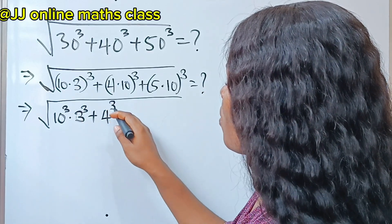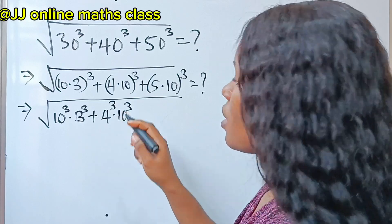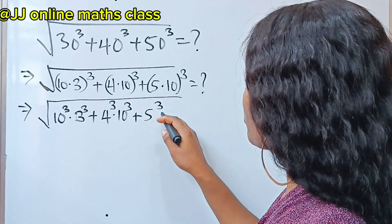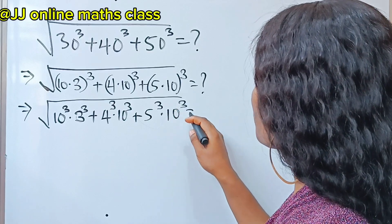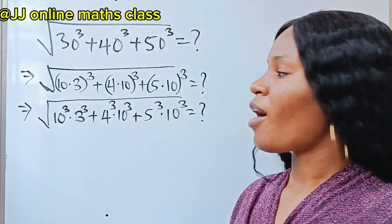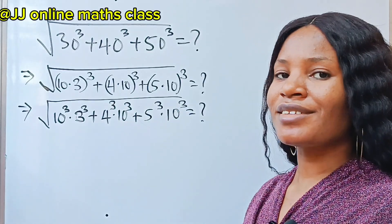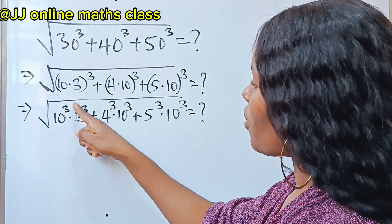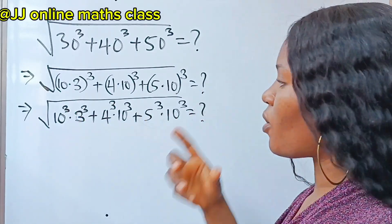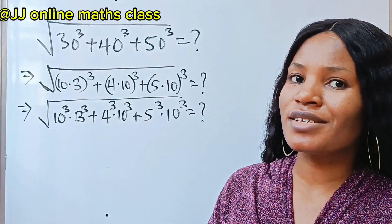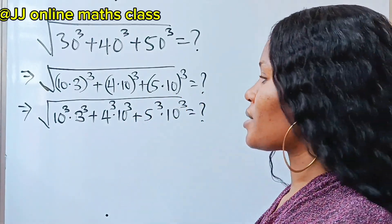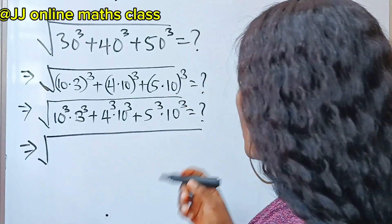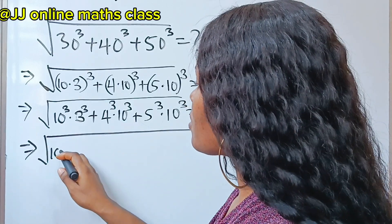Plus 4 to the power of 3 multiplied by 10 to the power of 3, plus 5 to the power of 3 multiplied by 10 to the power of 3, is equal to what. Now let's go ahead and factorize, because notice that we have 10 to the power of 3 appearing in all three terms, so we are going to factorize it out.